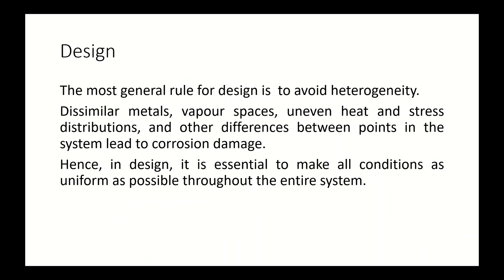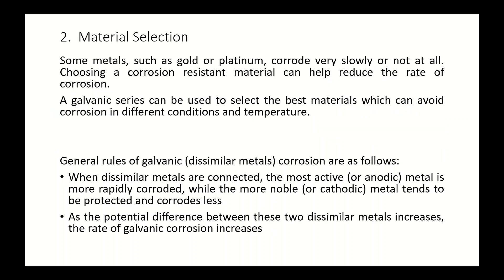The most general rule for design is to avoid heterogeneity — try to avoid different conditions or environments, different surface morphology, and try to be homogeneous and uniform. If the material is ferrum, use all ferrum with no combination of metals, in order to avoid galvanic corrosion. Dissimilar metals, vapor spaces, uneven heat treatment, stress distribution, and other differences between points in the system lead to corrosion damage. In design, it is essential to make all conditions as uniform as possible throughout the entire system.